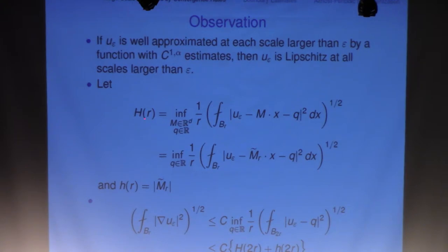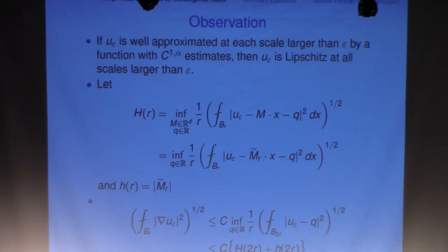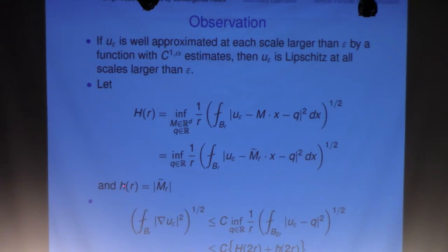Let's see how we carry out this scheme in the interior case. Later I'll mention how to set up for the boundary estimate — the idea is the same, though the technicality gets a little more complicated. We go back to H(R), which measures the excess decay of the solution relative to a linear function, taking the infimum among all vectors M and real numbers. The infimum is achieved by some vector M̃_R. I define little h(r) as the magnitude of this vector M̃_R.